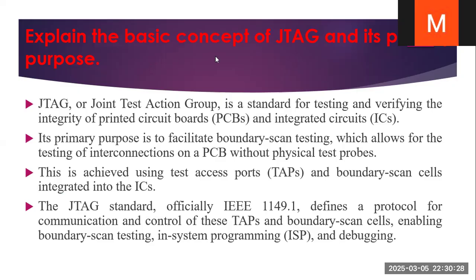Explain the basic concept of JTAG and its primary purpose. JTAG, or Joint Test Action Group, is a standard for testing and verifying the integrity of printed circuit boards and integrated circuits. Its primary purpose is to specify boundary scan testing, which allows for the testing of interconnections on a PCB without physical test probes. This is achieved using the Test Access Port and boundary scan cells integrated into the ICs. The JTAG standard, officially IEEE 1149.1, defines the protocol for communicating with and controlling these TAPs and boundary scan cells, enabling boundary scan testing, in-system programming, and debugging.